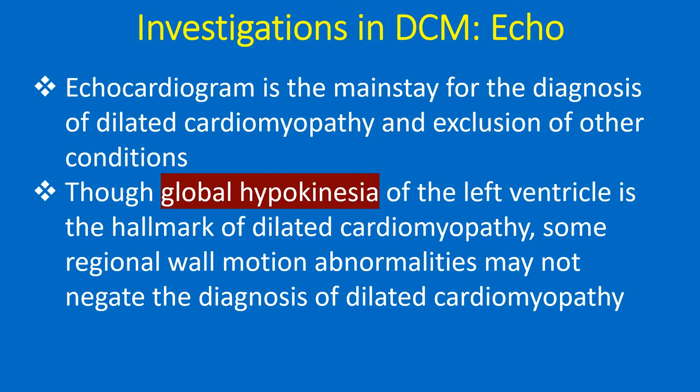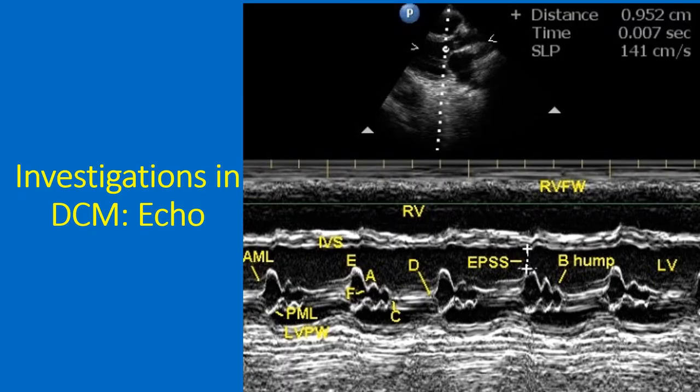Echocardiography is the mainstay for the diagnosis of dilated cardiomyopathy and exclusion of other conditions. Though global hypokinesia of the left ventricle is the hallmark, some regional wall motion abnormalities may not negate the diagnosis. On M-mode echocardiogram showing severe left ventricular dysfunction, a prominent B-hump is seen in the mitral valve echocardiogram indicating high left ventricular end-diastolic pressure. E-point septal separation (EPSS) is also increased.